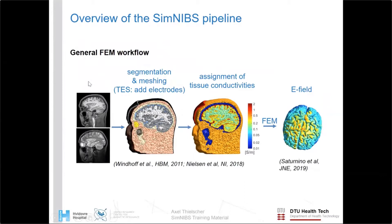This is the general workflow. We start with subject images — a T1-weighted image and optionally a T2-weighted image, which we recommend for robust segmentation, especially in the scalp region. These are used to segment the images and create an anatomical head model containing compartments for skin, muscle, skull, CSF, gray matter, and white matter.